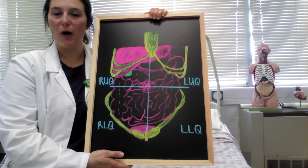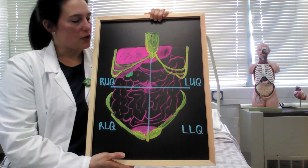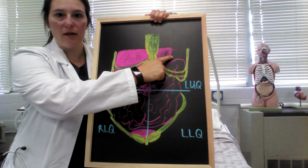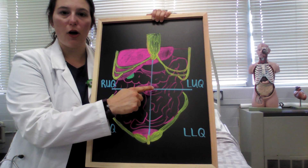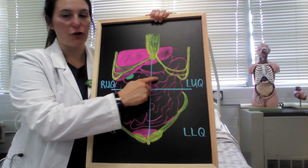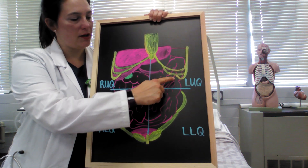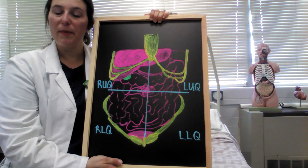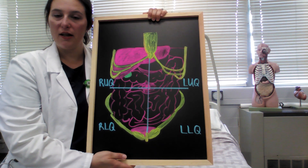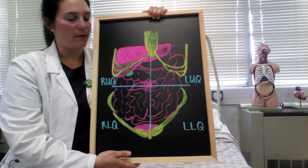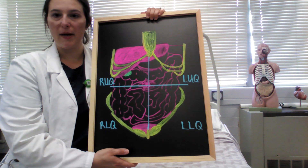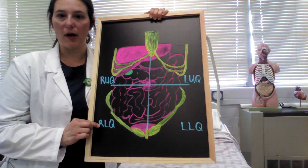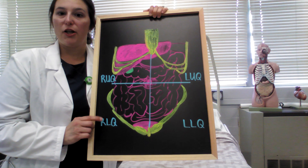Next, we're going to look at the left upper quadrant. In your left upper quadrant you're going to find your stomach, your spleen, part of your transverse colon, and your descending colon. What's not pictured — you'll also find your left kidney and the majority of the pancreas.